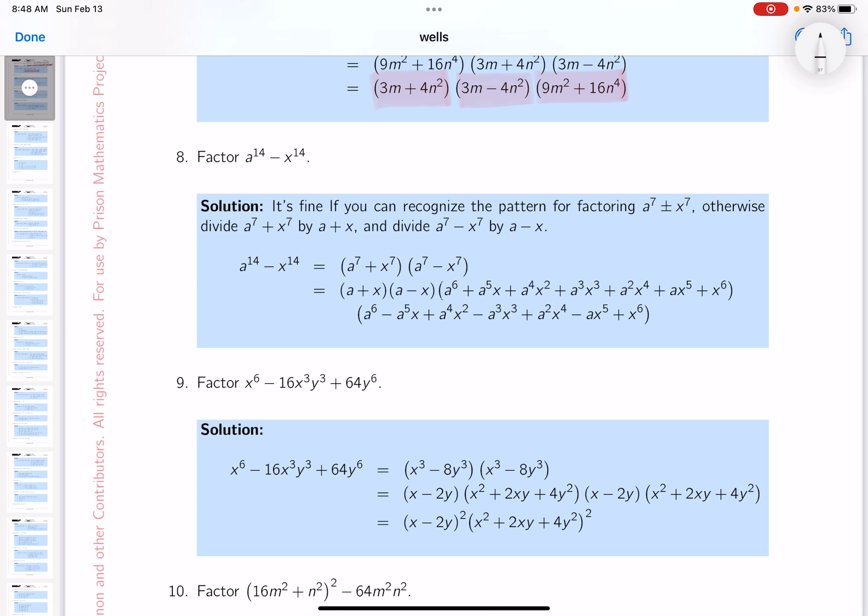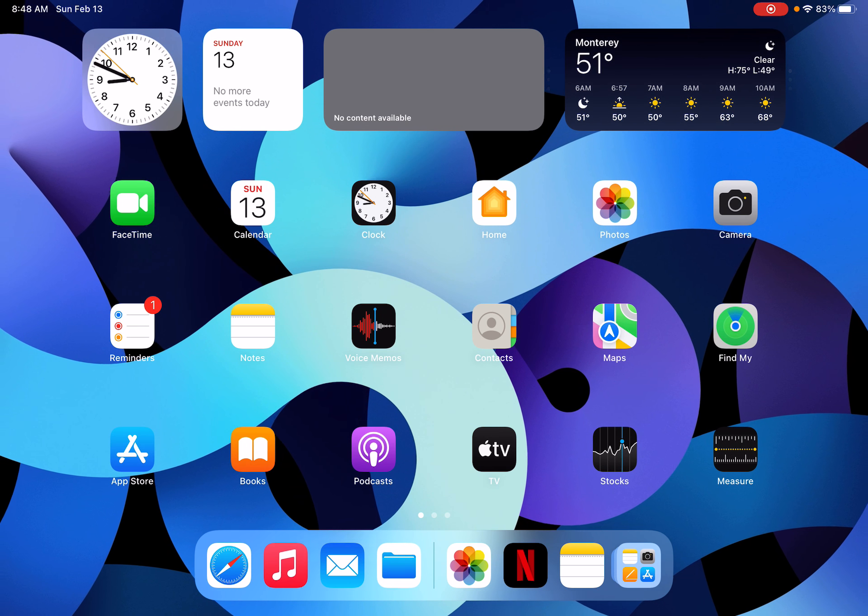I think at a minimum it's to recognize that this is a difference of perfect squares. And that's going to be a^7 minus x^7 times a^7 plus x^7. I realize that looks like a recognizable pattern, but let me go through it for you. I'm going to go to the whiteboard and I'll write something down for you.